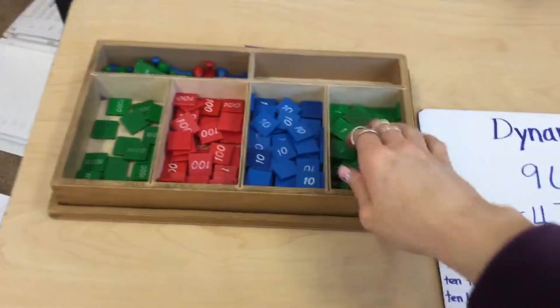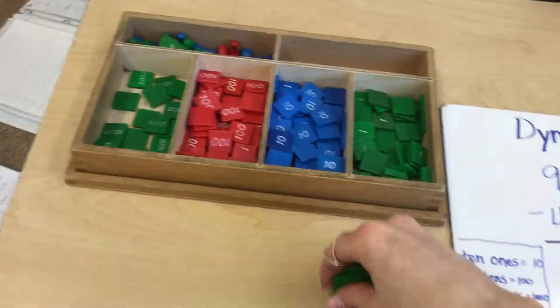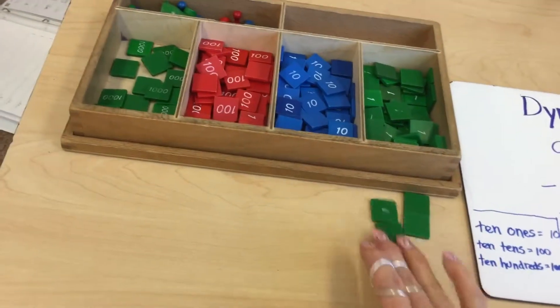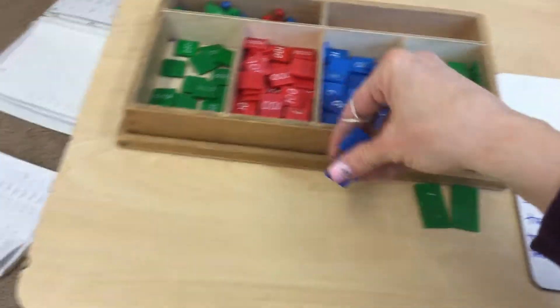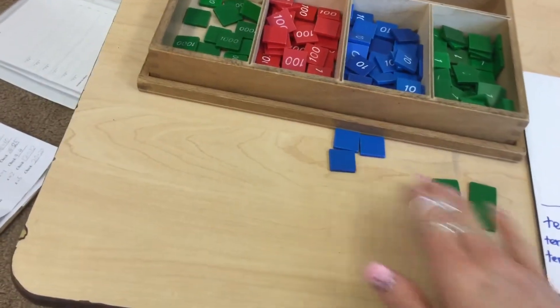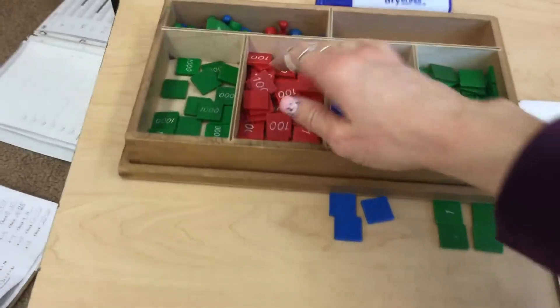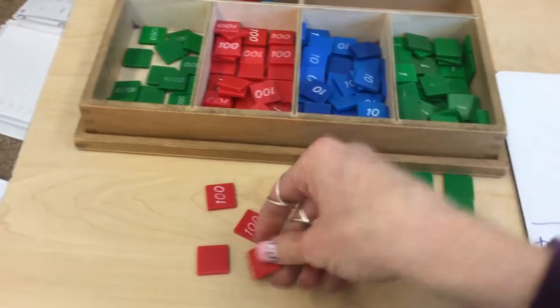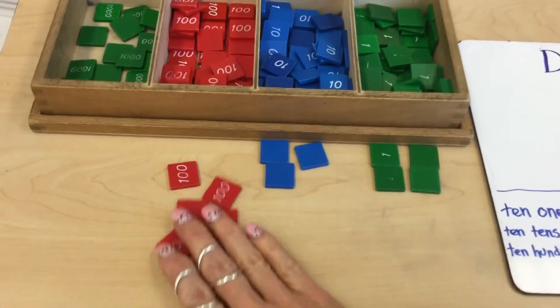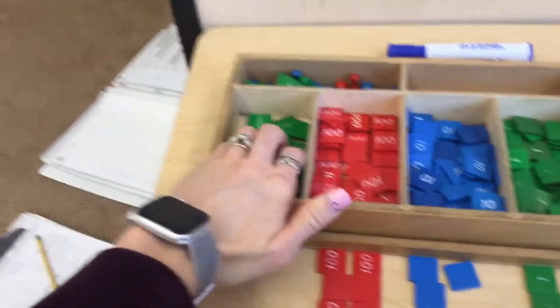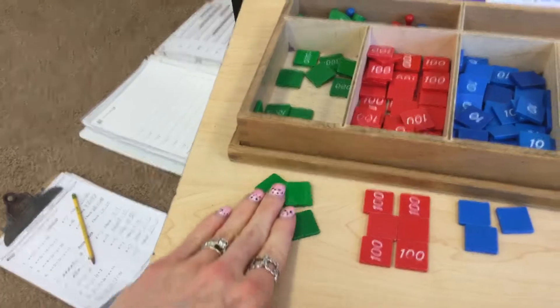So all I have to do is build nine thousand six hundred thirty-four. I'm going to be using my stamp game here. I'm going to pull out four ones, three tens, six hundreds. And no, they're not perfect, they're not all turned over. That's the beauty of the stamp game. Knowing that place value and that color code is extremely helpful.